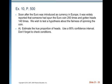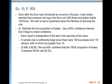Let's look at exercise 10 on page 500. Soon after the Euro was introduced as currency in Europe, it was widely reported that someone had spun the Euro 250 times and gotten heads 140 times. We wish to test the hypothesis about the fairness of spinning the coin. For part A, we're going to estimate the true proportion of heads using a 95% confidence interval. Don't forget to check the conditions.